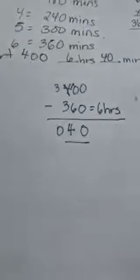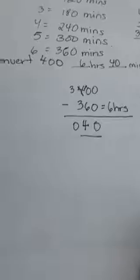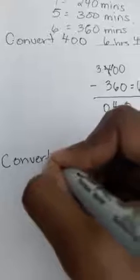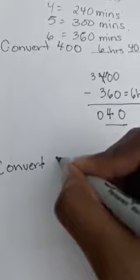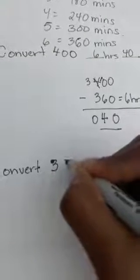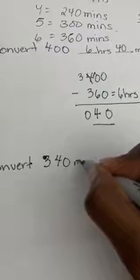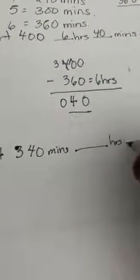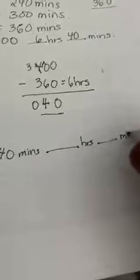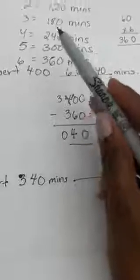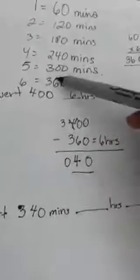Now what if I have another example? What if they're asking me to convert 340 minutes back to hours and minutes? The closest to 340 here that doesn't pass 340 is 300.